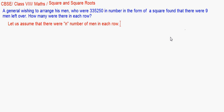As there were n number of men in each row, there will be the same number in columns as well, so the total number of men becomes n squared.